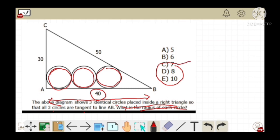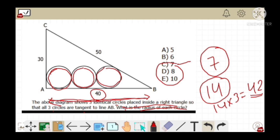For example, let us consider 7 as the radius of each circle. It means the diameter of each circle is 14. Now there are three circles, so 14 times 3 equals 42, which exceeds the length of AB. So 7 is not the correct answer for this question.